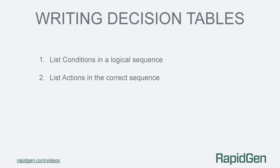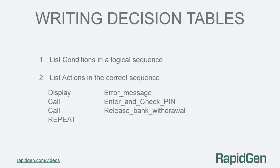The next thing is to list the actions we want performed in the correct order. If you want something actioned before another thing then it has to be higher in the list. For example, our actions are: display an appropriate error message, re-enter a pin and check it, dispense the money from the ATM, and repeat the decision table.